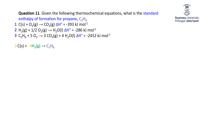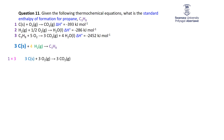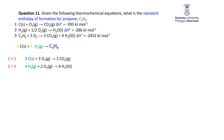I want 3 carbons on the left, so I take equation 1 (which has 1 carbon on the left) and multiply by 3. Next, I want 4H₂ on the left, so I multiply equation 2 by 4. Finally, I want C₃H₈ on the right, but equation 3 has propane on the left, so I flip equation 3. After these modifications I have the right reactants and products.